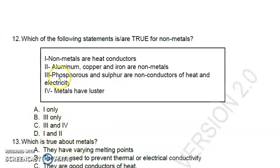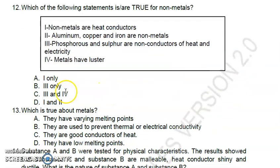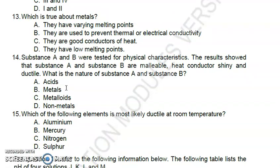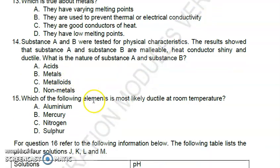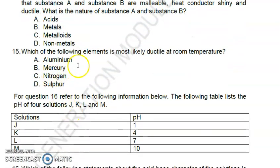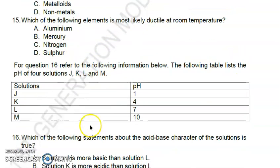Number twelve: which of the following statements are true for non-metals? The answer is letter B, three only - phosphorus and sulfur are non-conductors of heat and electricity. Number thirteen: which is true about metals? They are good conductors of heat. Number fourteen: substance A and B were tested for physical characteristics. The results show that both are malleable, heat conductor, shiny, and ductile. What is the nature of substance A and B? The answer is letter B, metals.